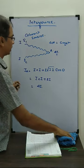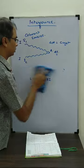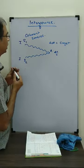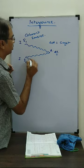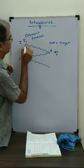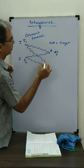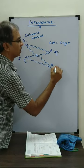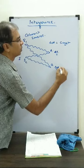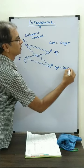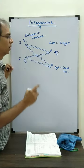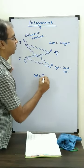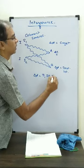Similarly, if I take another point B, and at that point B they are meeting, and here delta phi corresponds to destructive interference. The delta phi value for destructive interference is pi, 3 pi, 5 pi, and so on.